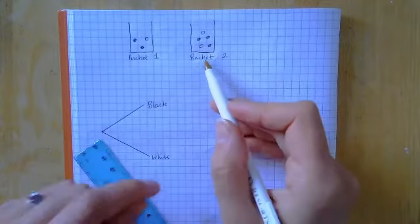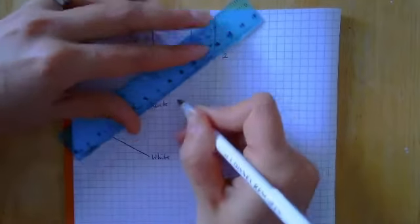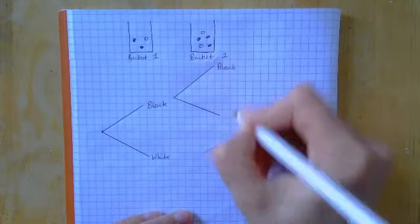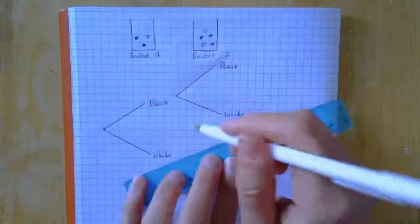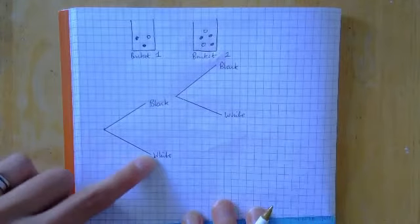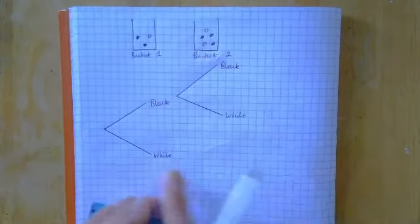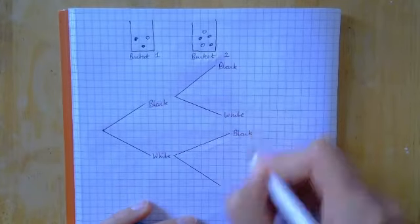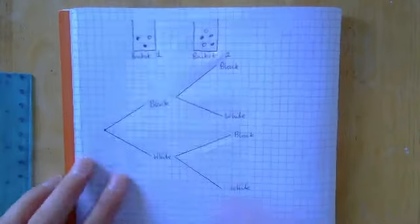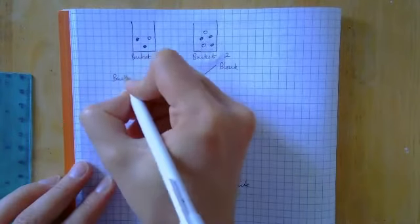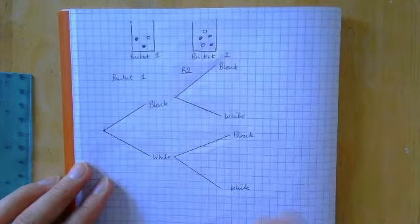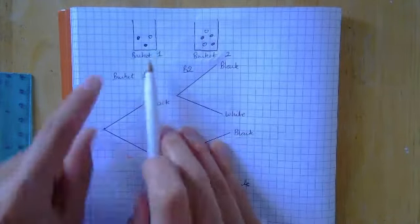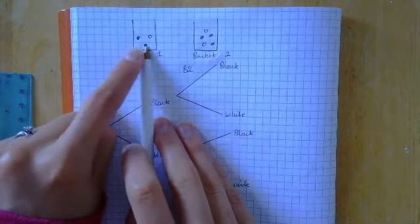So let's write black and white for the first set of branches. Now for bucket two, I could get a black or I could get a white — those are the only two options. And the same applies whether I picked black or white from bucket one — I still get a black or a white from bucket two. Let's label this bucket one and this bucket two, and now put some fractions onto our tree diagram.